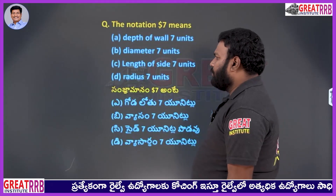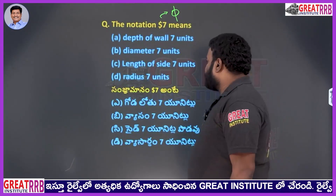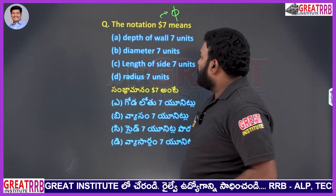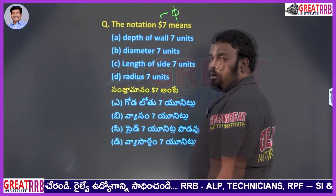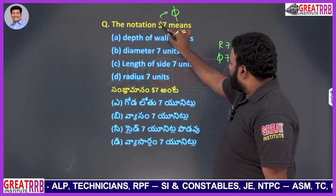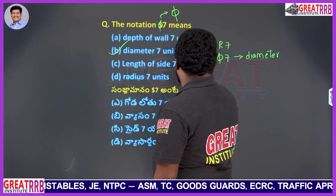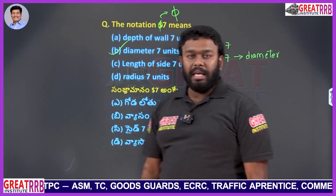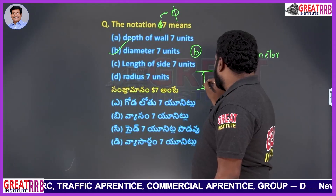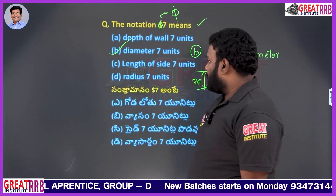The notation ⌀7: this is not a dollar sign; ⌀ represents diameter. So ⌀7 means a diameter of 7 units — not depth of 7, not length of side 7, not radius 7. The symbol ⌀ represents diameter, so option B, diameter, is the right answer. For radius we use R, and for linear length no symbol prefix is needed.